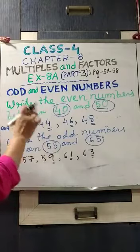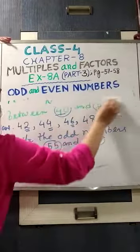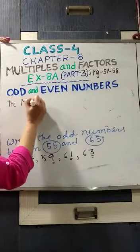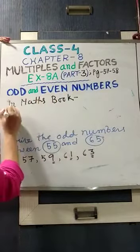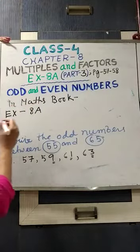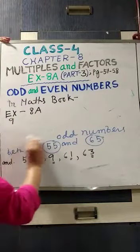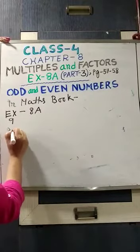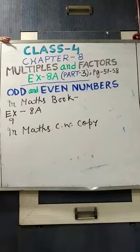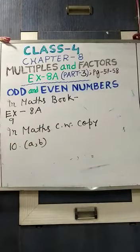So, in this way you have to find out the even numbers and the odd numbers. Now, the work you have to do in your Maths book: exercise 8, number 9, you will do in the Maths book. And in the Maths classwork copy, that is questions 10A and 10B, you will do in the Maths classwork copy.